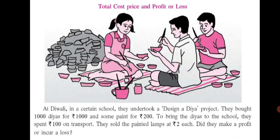They bought 1,000 diyas for Rs. 1000, so cost price is Rs. 1000. And they sold for Rs. 2 each, meaning 1,000 diyas × Rs. 2 = Rs. 2000. As per practice set 31, it appears to be a profit since the selling price is more. But what about the amount given for paint and transport? Where are they to be included? That is what total cost price means. So now we are going to learn about total cost price.